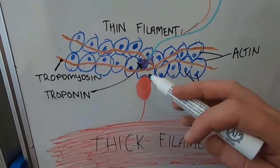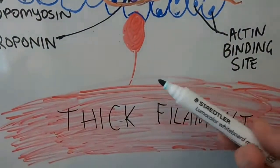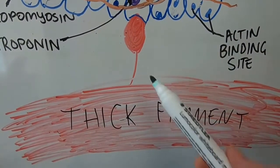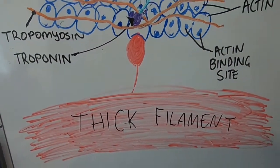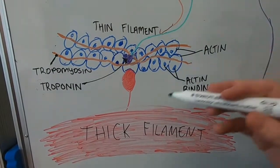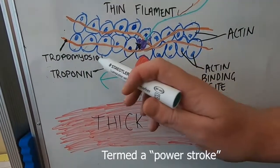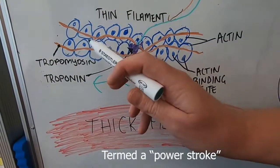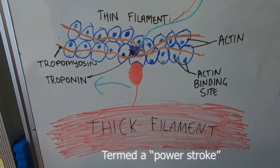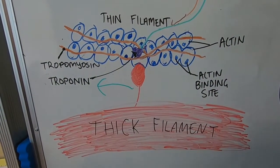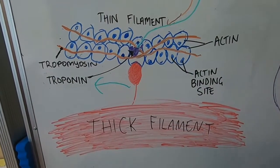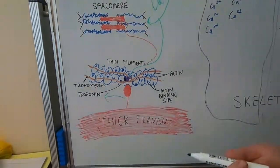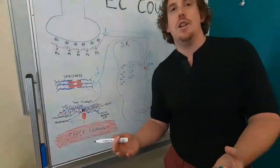What this means is the actin can now bind to the myosin head. When the myosin head binds to the thin filament, it moves this way, and by doing so will move the entire thin filament with it. And of course, when this happens across multiple myosin heads and many times over, that's how we get a sustained muscle contraction and generation of force.